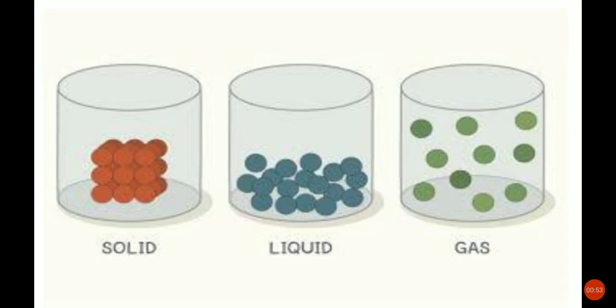As we have all studied, matter has three main physical states: solid, liquid, and gases. Many other states exist, but usually we study only these three. Here in this chapter we discuss solid state.